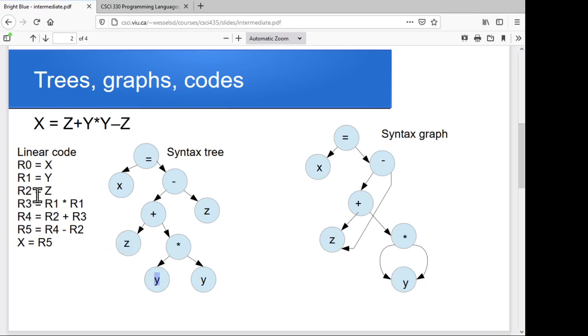We can store z in a temporary variable. Then we can go through and say, let's take the product of, where we store y was in R1. So we'll take the product of R1 times R1, and we'll store that in a temporary variable. Now we've got the result of this subtree in a temporary variable, and we'll use that.